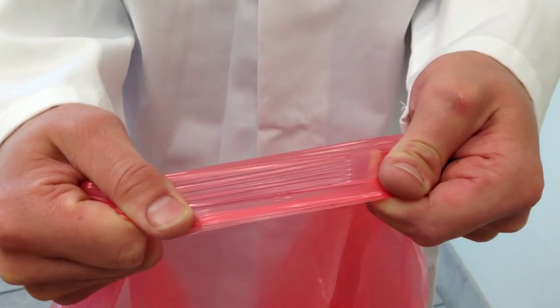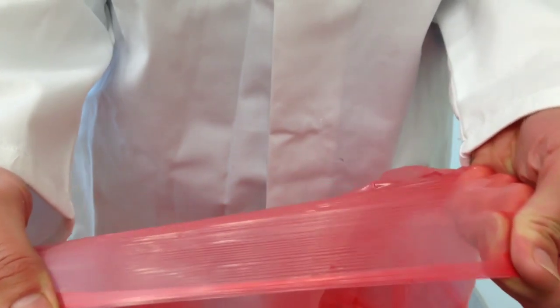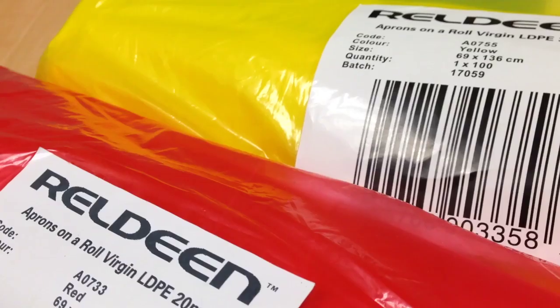Our new RELDEEN food aprons are made from robust 100% LDPE virgin material and perforated on a roll to help with dispensing and of course cost in use.